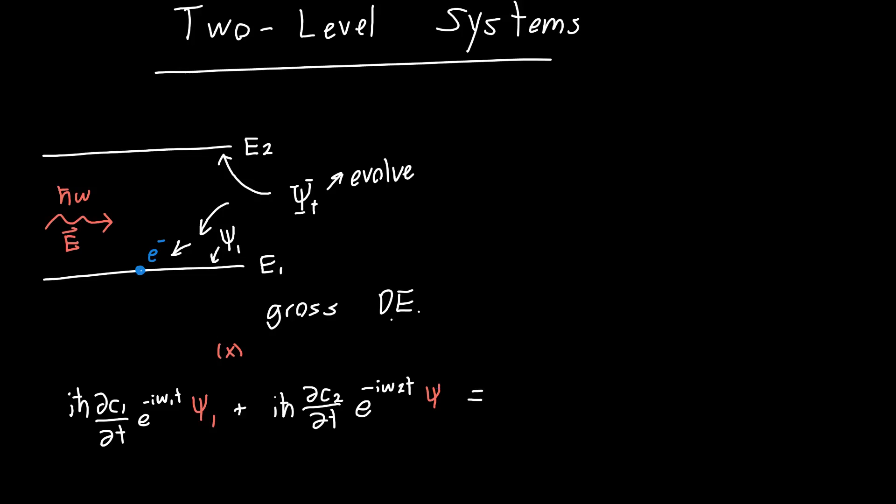We said that this was all equal to c1 e to the minus i omega 1t times this perturbing Hamiltonian h prime. And we calculated h prime, we actually have an expression for it. It's just equal to q, the electric charge constant, times the electric field applied e naught, times x, times cosine of omega t, where omega is the frequency of our incoming light. So this is h prime psi 1, plus c2, same exact thing for c2, e to the minus i omega 2t h prime psi 2. This should be a psi 2 over here as well.